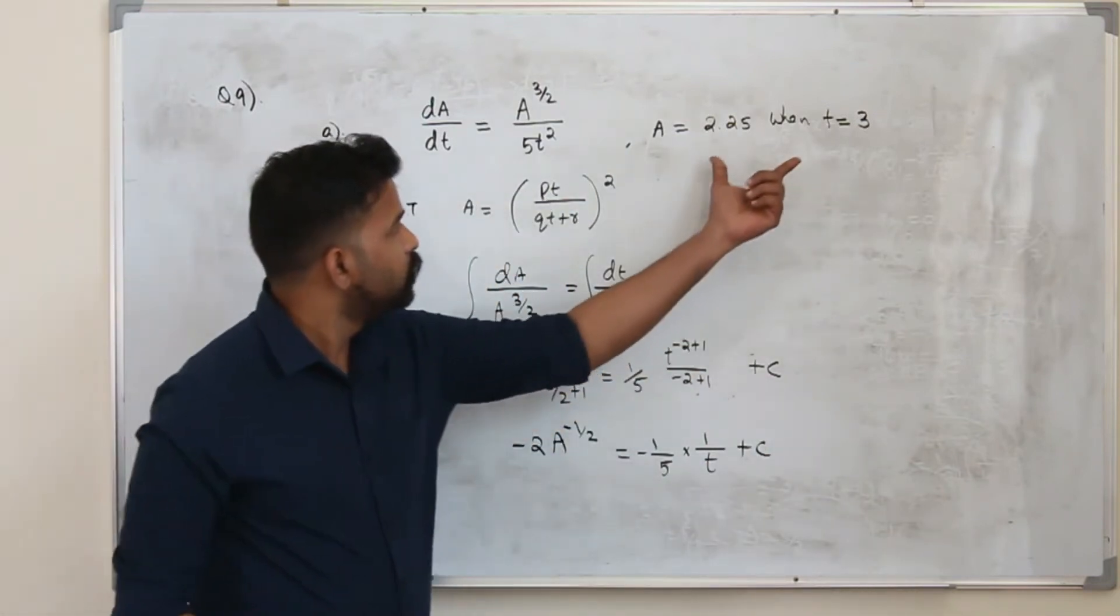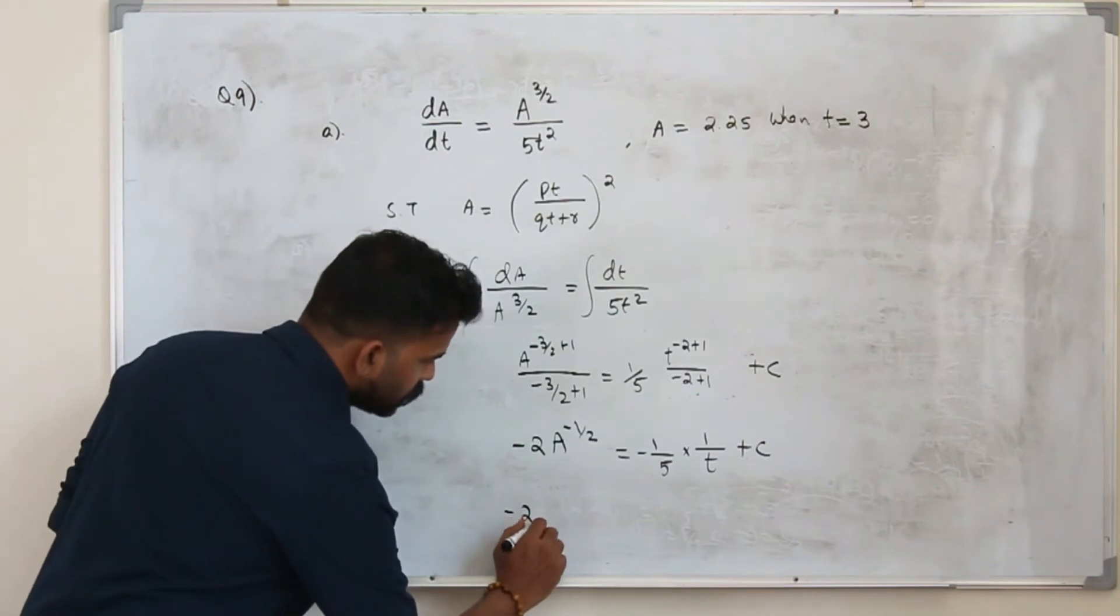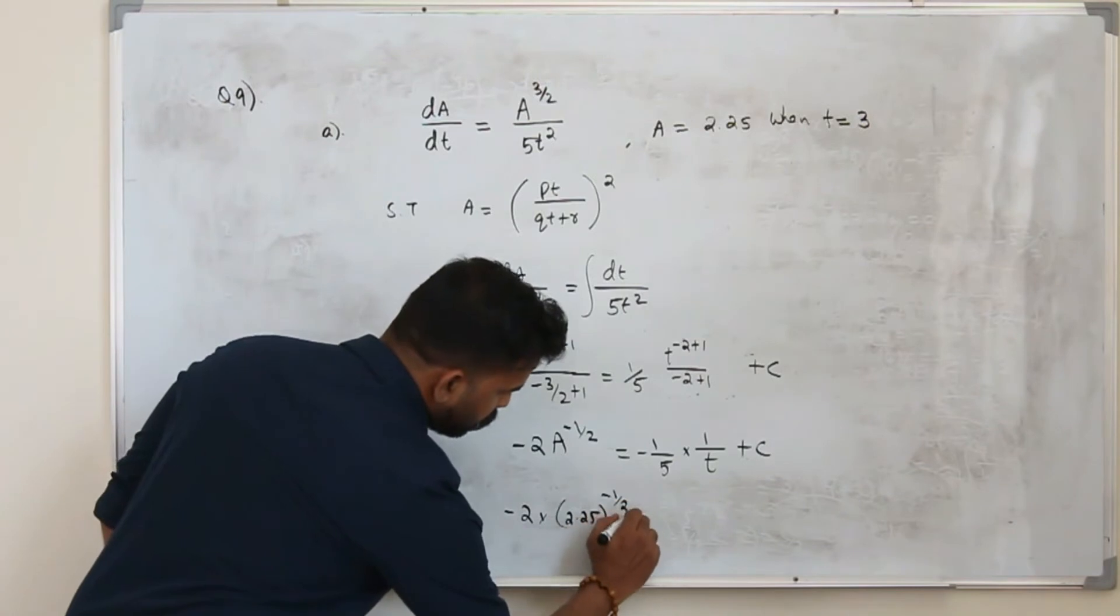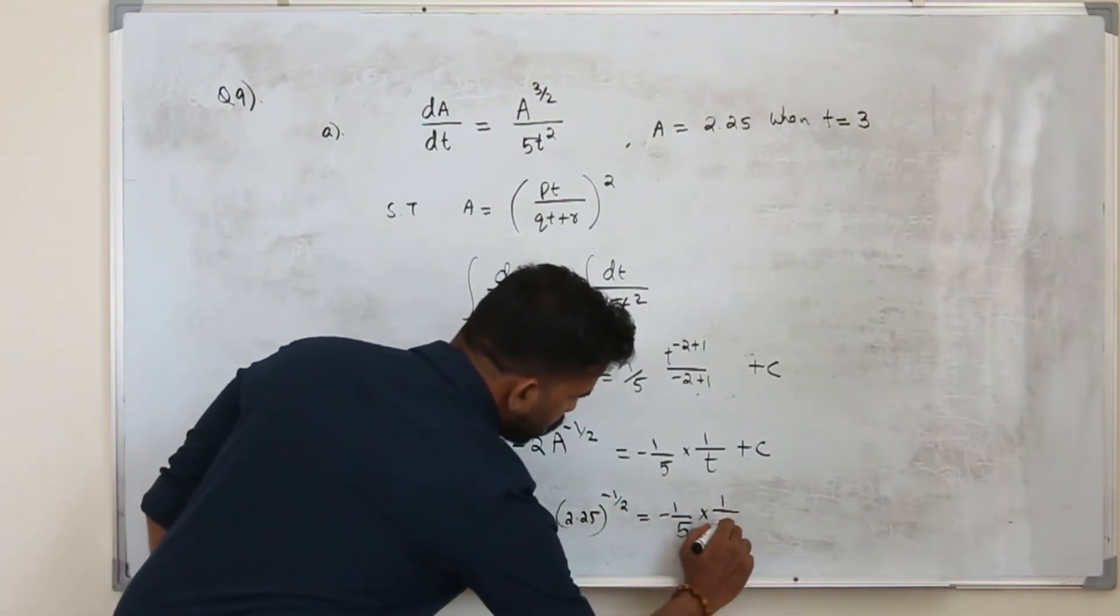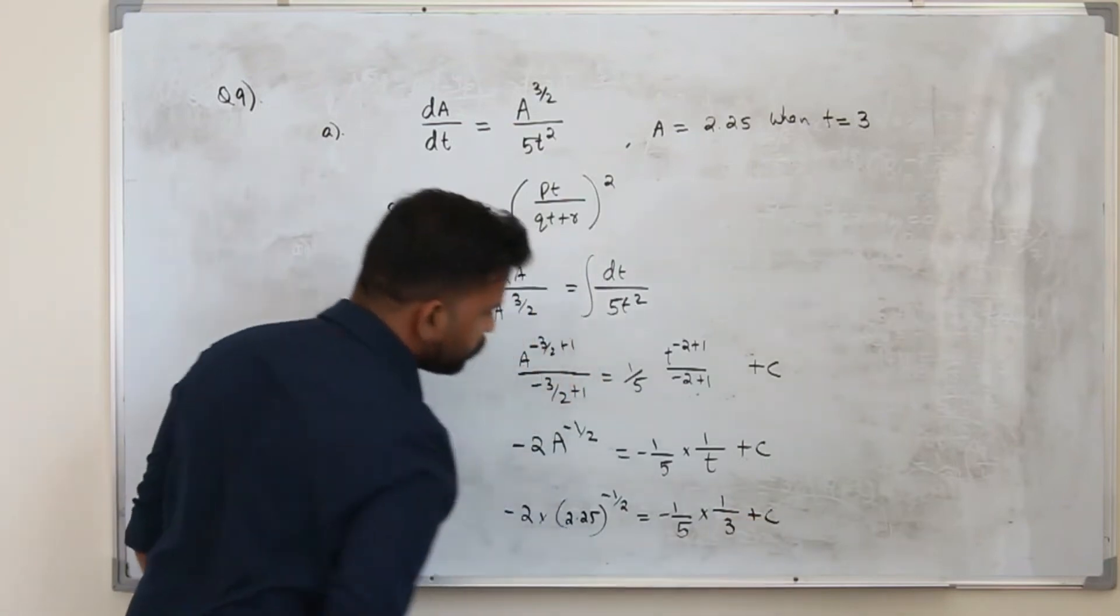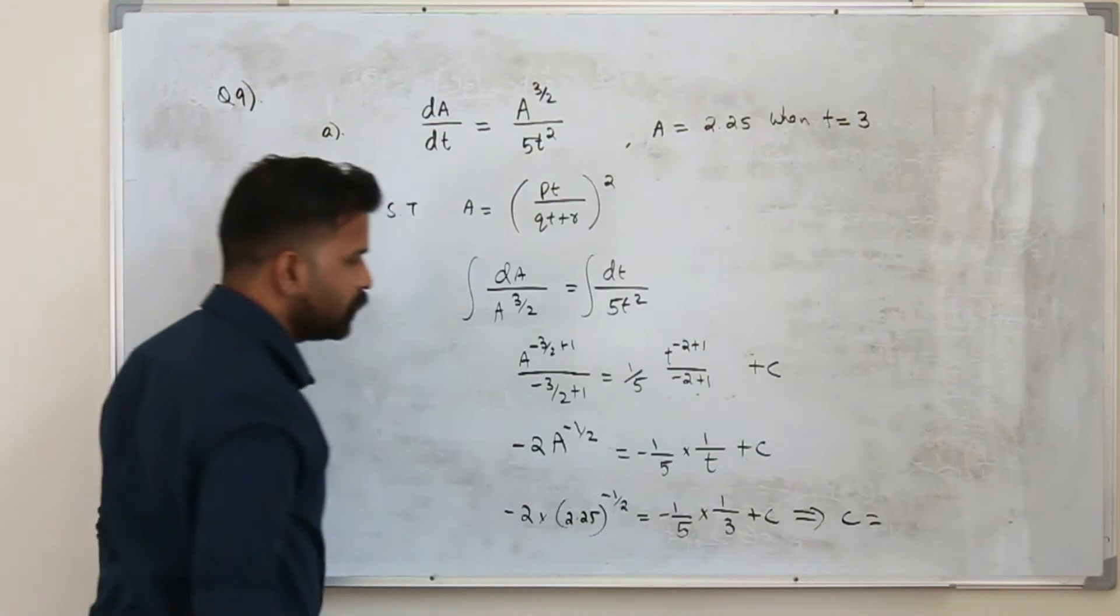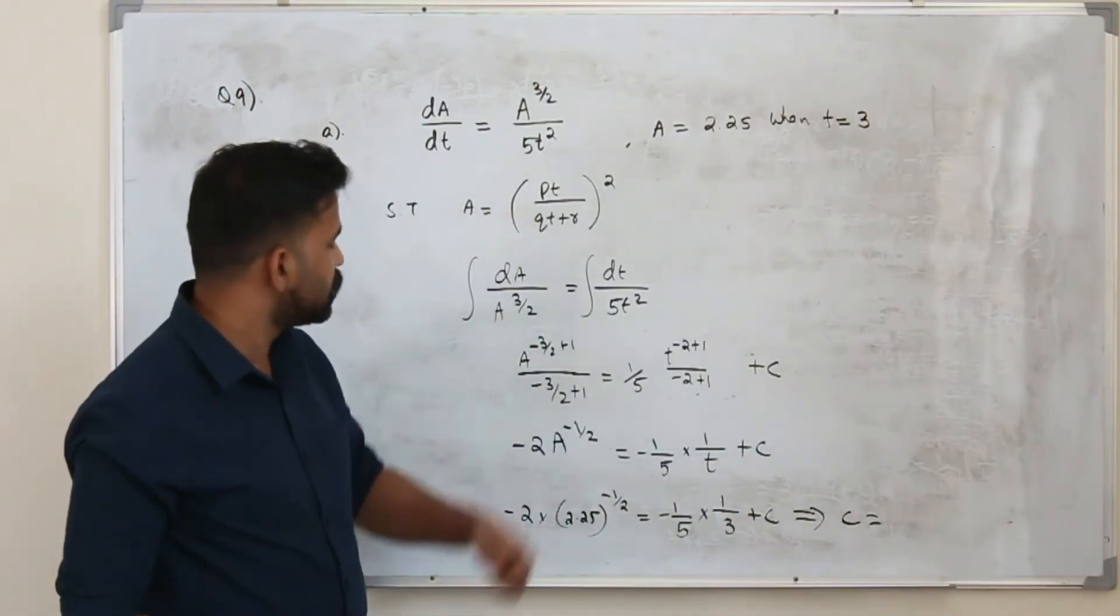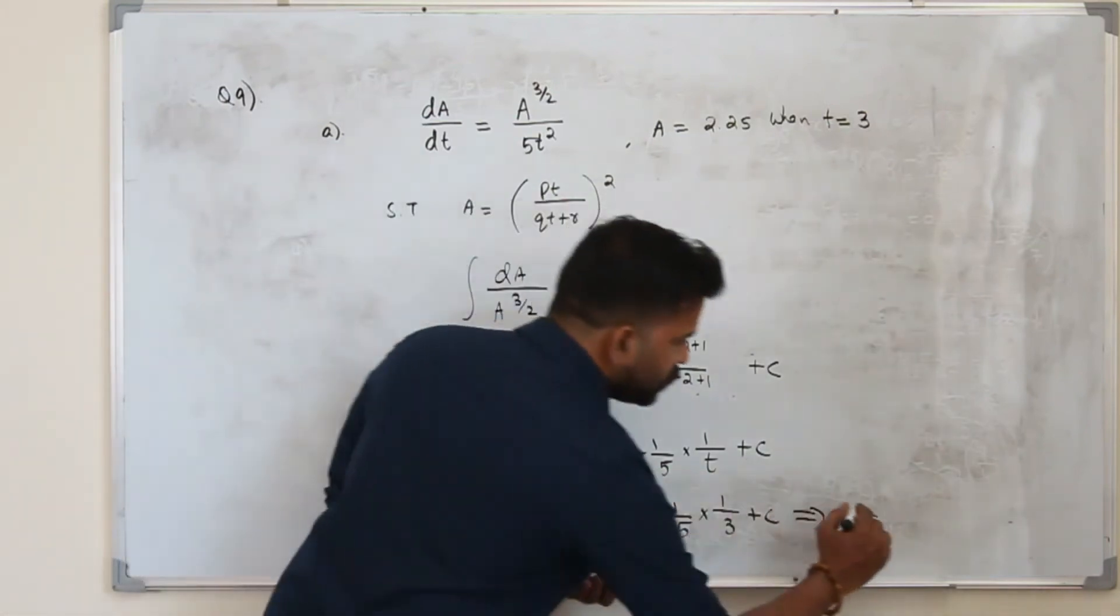Now substitute these values to find c. So minus 2 into 2.25 to the power minus half equals minus 1 by 5 times 1 upon 3 plus c. So you can get the value of c straight away. The value of c is minus 19 over 50.